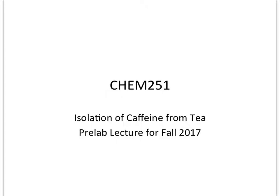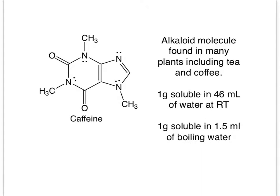This is our pre-lab lecture for the isolation of caffeine from tea. We're going to do another extraction this week. Caffeine is an alkaloid molecule — an alkaloid is a plant molecule that is basic. You see the nitrogens inside the ring that are part of the aromatic system, but this nitrogen here is available and can be protonated, and it is this basic fact that makes these compounds called alkaloids.